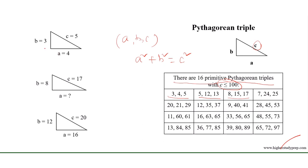For example, in this right angle triangle, the two legs are 3 and 4, and the hypotenuse is 5. These form a Pythagorean triple such that 3 squared plus 4 squared equals 5 squared.